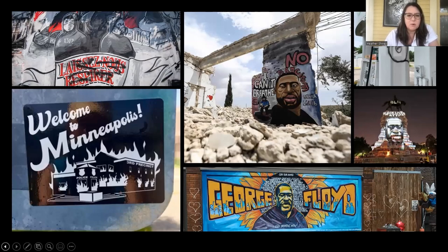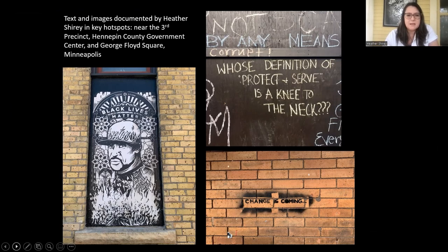That image shows some work that was wheat-pasted by the third precinct in Minneapolis. On the bottom right, that's a stencil at George Floyd Square. And at the top, that's chalk on a board at the Hennepin County Government Center at the time of jury selection, when any interaction with the wall space was really monitored and controlled, so even writing with chalk was a risk.